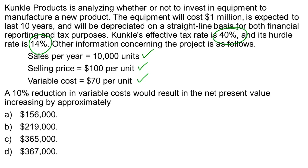Here's our question: a 10% reduction in variable costs would result in the net present value increasing by approximately how much? There are two ways we could do this. One is to calculate the net present value with the original information and then recalculate with variable cost reduced from $70 to $63 per unit — with 10,000 units at $100 selling price — and compare those two answers.